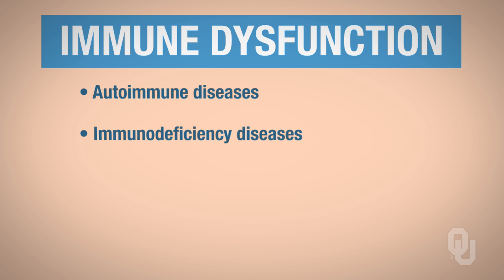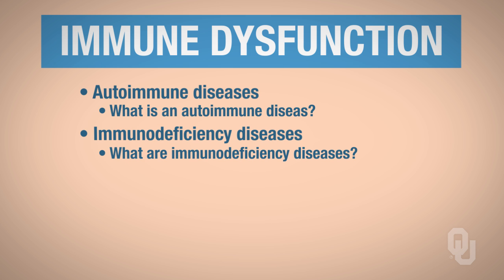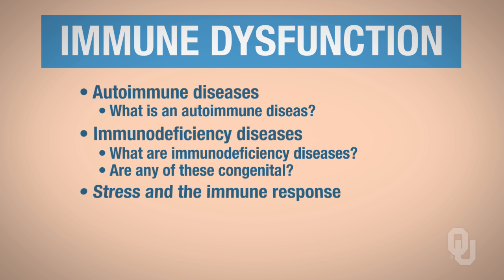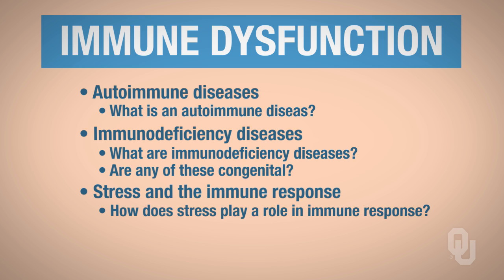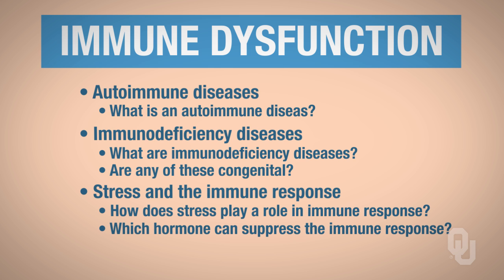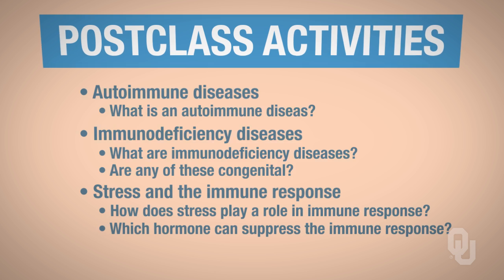Then there are autoimmune diseases — so what is an autoimmune disease? And then there are immunodeficiency diseases — what are immunodeficiency diseases? Are any of these congenital? And then stress and the immune response: how does stress play a role? Think back to hormones — which hormone can suppress the immune response?